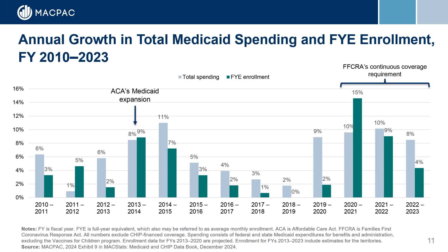Looking further into growth trends, this graph shows the annual growth rates in Medicaid enrollment and spending. From fiscal year 2013 to 2023, annual growth in Medicaid enrollment and spending averaged 5 and 6%, respectively. These increases were concentrated in 2013 to 2015, when states began to expand Medicaid under the Patient Protection and Affordable Care Act, and in 2020 through 2023, due to the continuous coverage requirement under the Families First Coronavirus Response Act. Excluding these years with sharp growth, annual enrollment growth averaged 2% and spending growth averaged 4%.